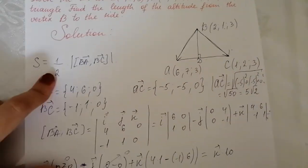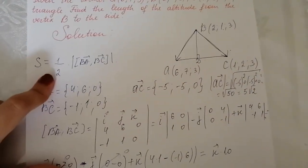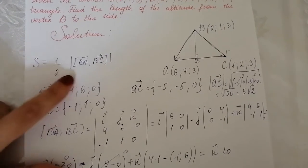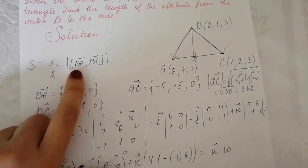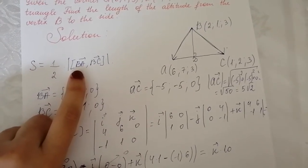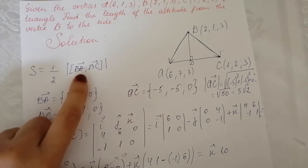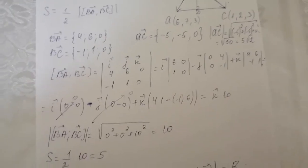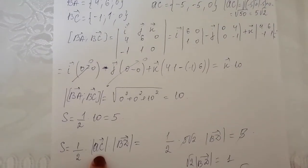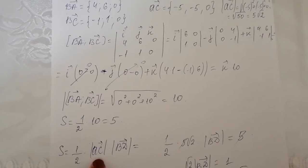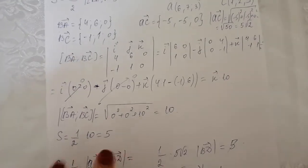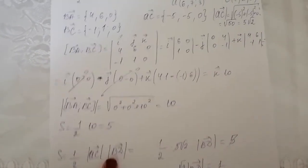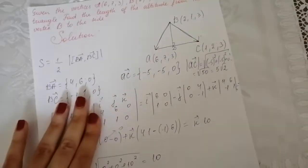I used two formulas of area: S equals one half times the absolute value of the vector product of vectors forming the triangle, and area equals one half times the base side times the altitude to that side.